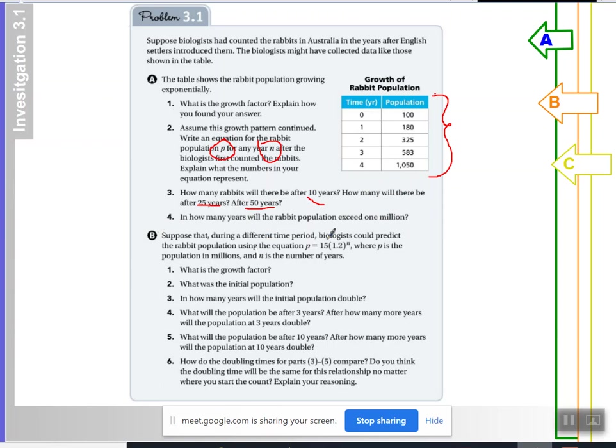In problem B, instead of giving you a table, you are given an equation for a different population of rabbits. And you're going to use this equation to find the growth factor and the initial population. And then, this is actually a really big idea when it comes to exponential growth. It's the idea of a doubling time. So, you're going to try to figure out how many years it takes for the population to double. You're going to find out how long it will take the population to double after three years, and then you're going to see how long it takes for that population to double. What is the population after 10 years? And then, figure out how long it will take for the population of 10 years to double again. And you're going to compare these doubling times. Are there any questions about what you're being asked?